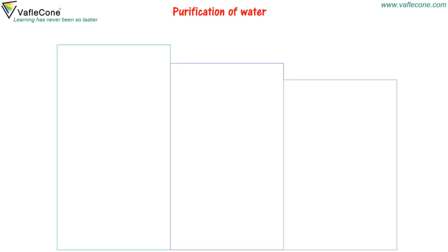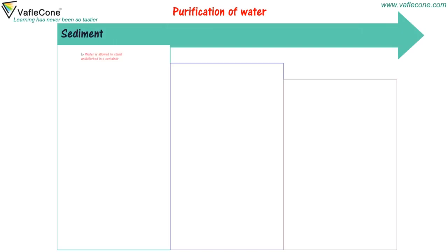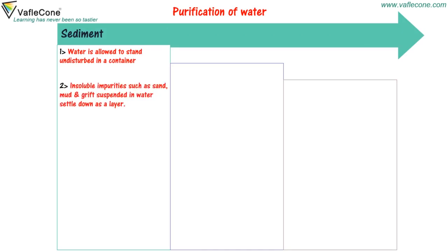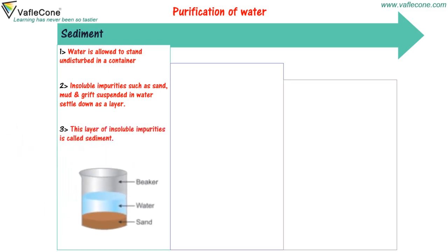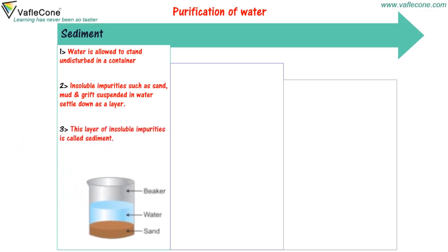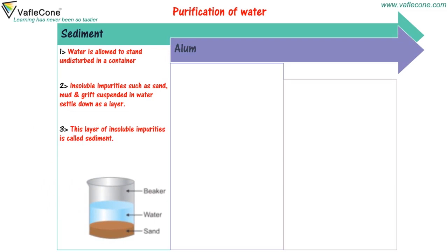Purification of Water — Sedimentation: Water is allowed to stand undisturbed in a container. Insoluble impurities such as sand, mud and grit are suspended in water and settle down as a layer. This layer of insoluble impurities is called sediment.